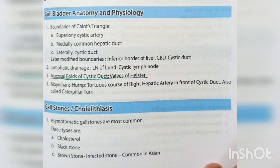Gallbladder anatomy: Calot's triangle boundaries — superiorly cystic artery, medially common hepatic duct, laterally cystic duct. Modified boundaries: inferior border of liver, CBD, and cystic duct. Lymphatic drainage via Lund's lymph node and cystic lymph node. Mucosal folds of the cystic duct are valves of Heister. Moynihan's hump is the tortuous course of the right hepatic artery in front of the cystic duct, also called caterpillar turn. Gallstones: asymptomatic gallstones are most common; three types are cholesterol, black stones, and brown stones. Brown stones are infected stones, common in Asian populations.